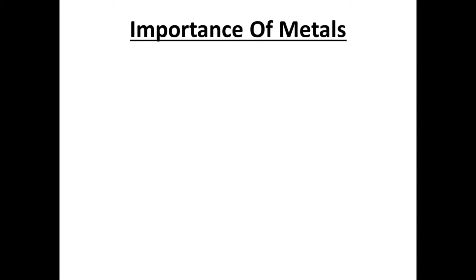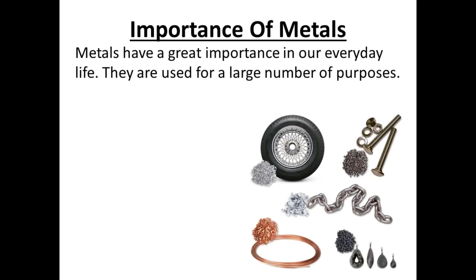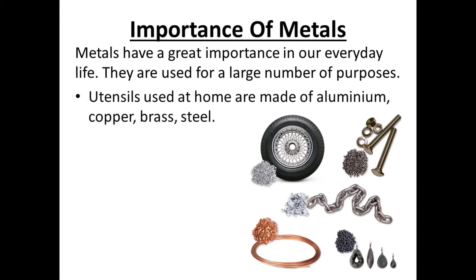Next is the importance of metals. Metals have a great importance in our everyday life. They are used for a large number of purposes. First, utensils used at home are made of aluminum, copper, brass, and steel. We use different types of utensils which may be made up of these different metals.